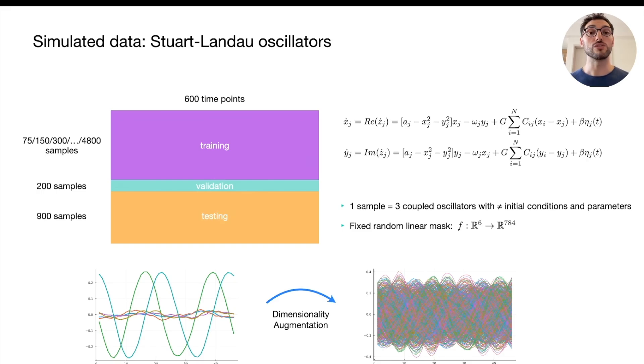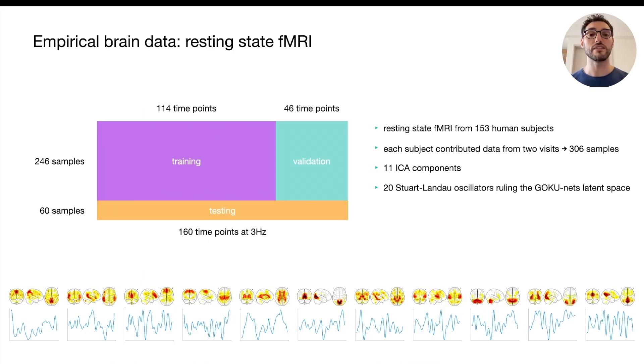We evaluated the models on two datasets, one synthetic and one empirical. For the synthetic one, we used three coupled stochastic Stuart-Landau oscillators with different initial conditions and parameters, while augmenting their dimensionality, in order to have some high dimensional inputs, which were actually sourced from some low dimensional dynamical system. On the other hand, for the empirical data, we used resting state fMRI from 153 human subjects, and in particular 11 time courses from a canonical ICA analysis, while using also Stuart-Landau oscillators as the dynamical core for the GokuNets.